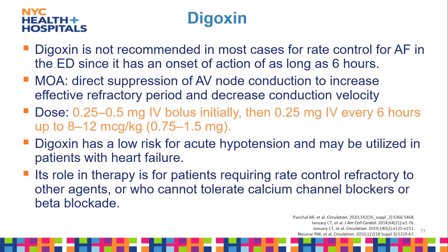Digoxin is not recommended as a first-line option in the ER because it has a slow onset of action of up to six hours, so you won't see an immediate effect on heart rate. It's usually given as 0.25 to 0.5 mg IV bolus, then 0.25 mg IV every six hours up to 8 to 12 mcg/kg as the loading dose. It causes direct suppression of AV node conduction, increasing the refractory period and decreasing conduction velocity.